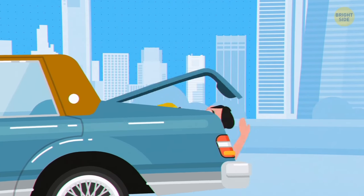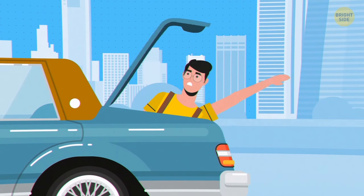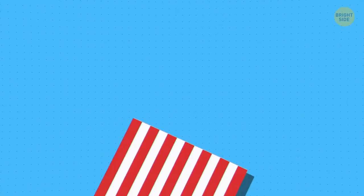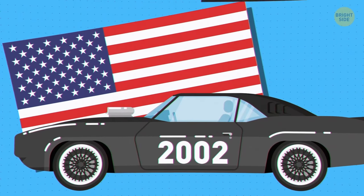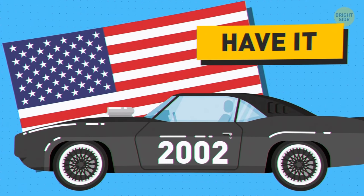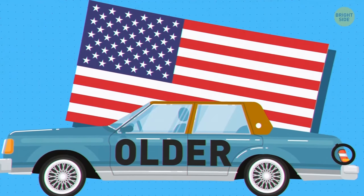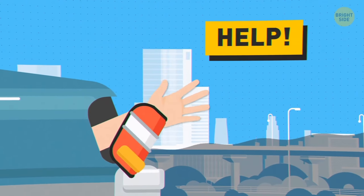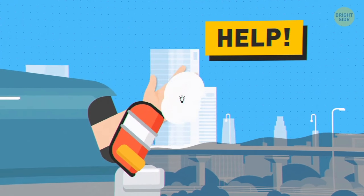To escape from a car trunk, boy, what a day! Find the trunk release inside. It looks like a glow-in-the-dark handle. All American-made vehicles built after 2002 are required to have it. But if the car is older, rip the wires out of the brake lights and kick them out. Then you'll be able to slip your hand through the hole and let people know you need help.